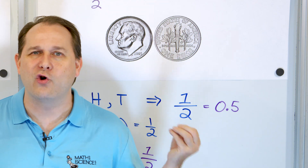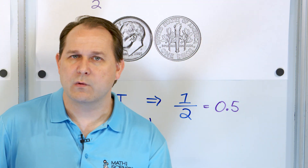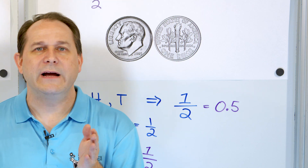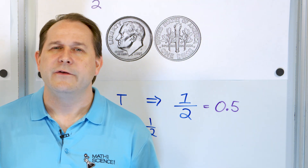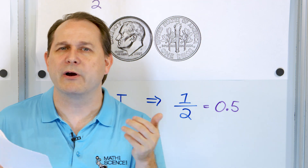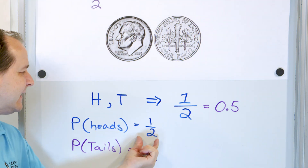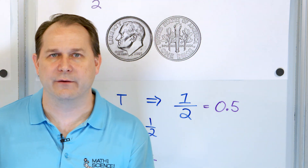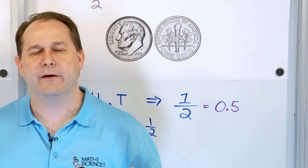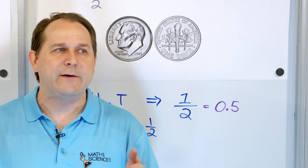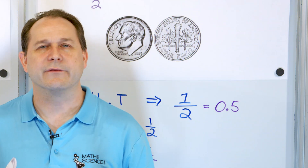If you flip this coin twice, you may get two heads in a row, two tails in a row, or heads and tails alternating. When you do a small number of flips, you may not get something exactly equal to half heads and half tails. If I flip it four times, you'd expect two heads and two tails; flip it six times, you'd expect three heads and three tails.